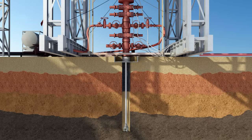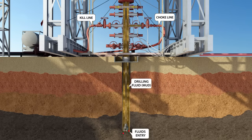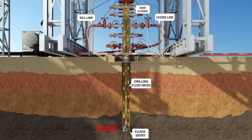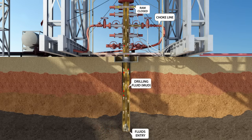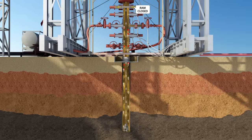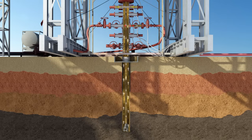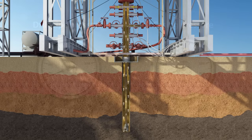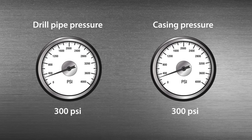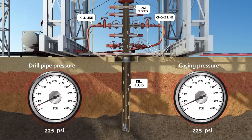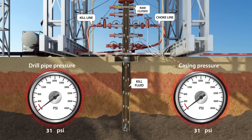The kick will be circulated out of the wellbore using the driller method first cycle, by pumping drilling fluid downstream and getting returns from the annulus through the choke line to the choke manifold. The poor boy degasser will process returns and toxic gases will be flared. Once the kick is out, the well will be shut in. Then the well will be killed with weighted mud, by circulating the kill fluid until both the drill pipe and casing pressures reach zero.